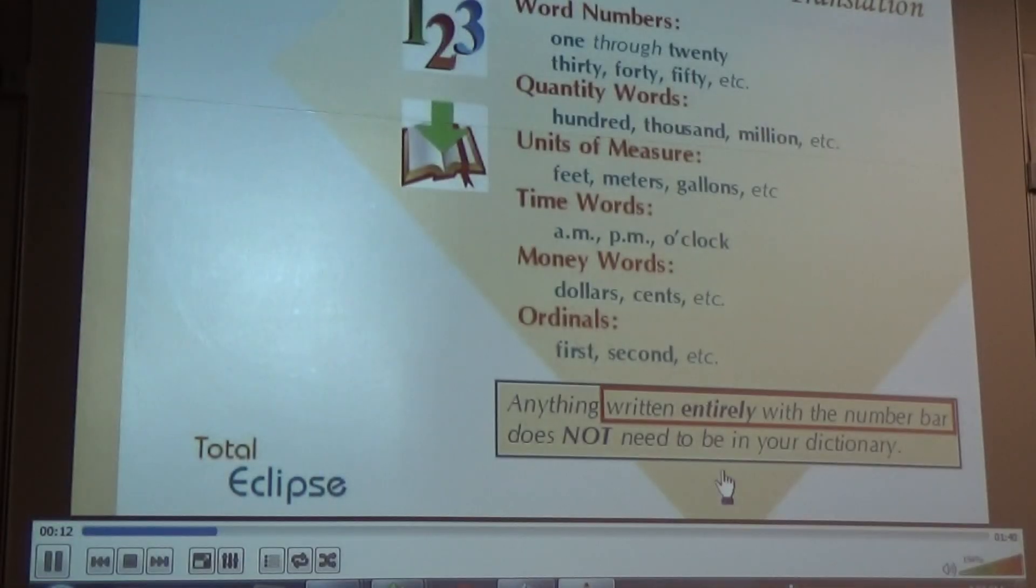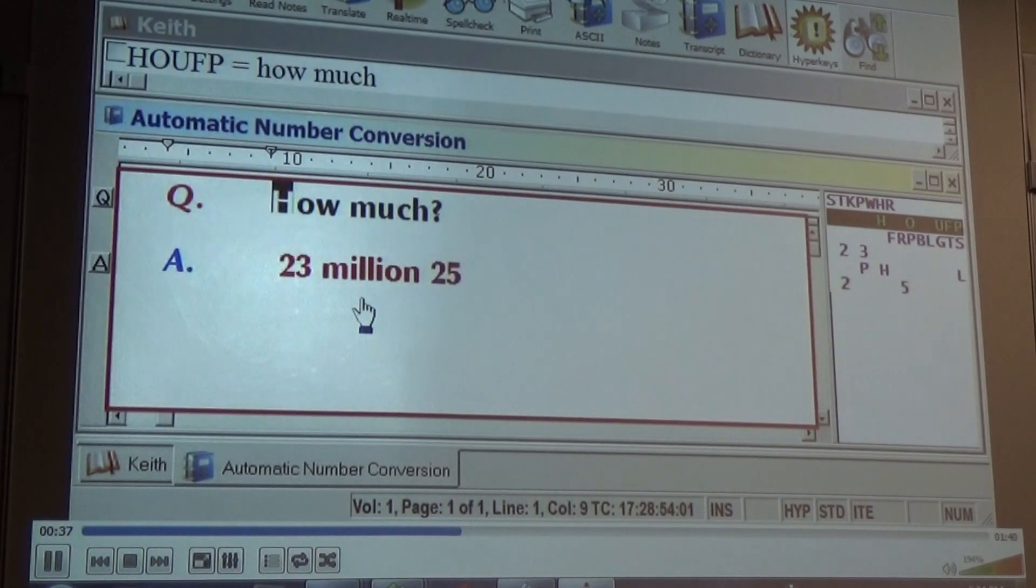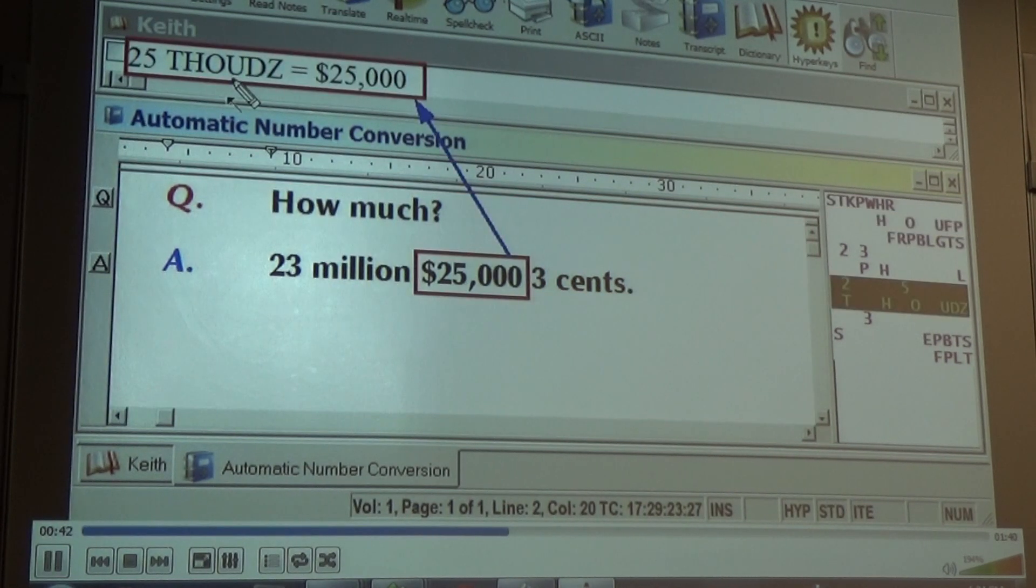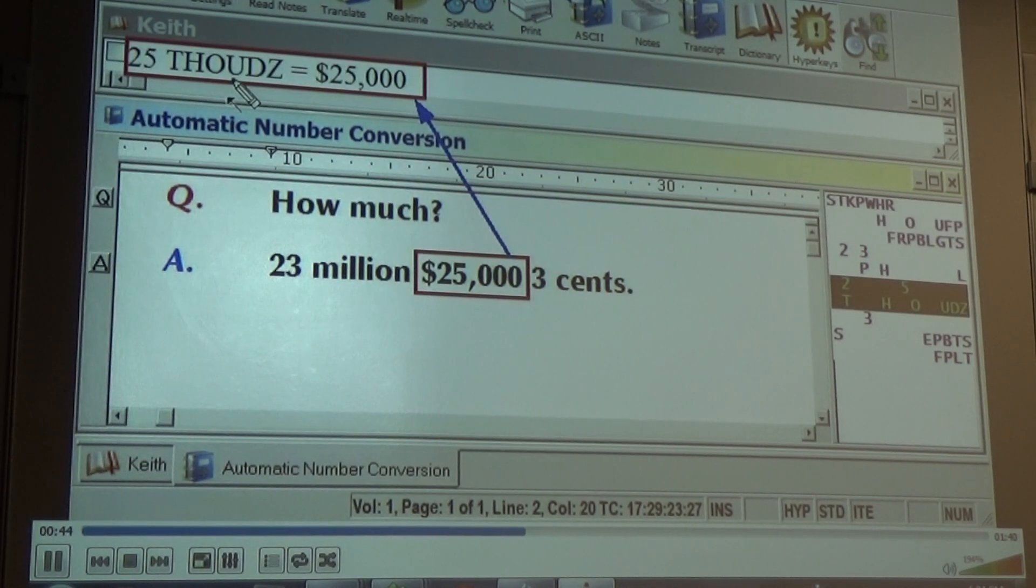Pure number bar strokes aren't even necessary in your dictionary. Other number building blocks will be defined as words, not digits. Hundred, thousand, million describe orders of magnitude. Write the word dollars when you hear it, not before, and it will trigger number conversion with the appropriate currency symbol. If a number doesn't translate right, it's probably because of an old dictionary entry. Remove such entries and your building blocks will work properly.